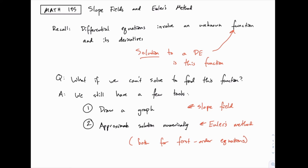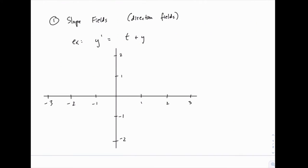We'll start with slope fields, and then we'll see how we can use that concept to understand Euler's method as well. For slope fields, let's take an example and illustrate how we can draw a shape of the solution even if we can't find its closed form — we can still visualize it. Here's an example where we have a differential equation y' = t + y, a relatively simple first order differential equation, and we're going to draw what's called the slope field or direction field for this equation.